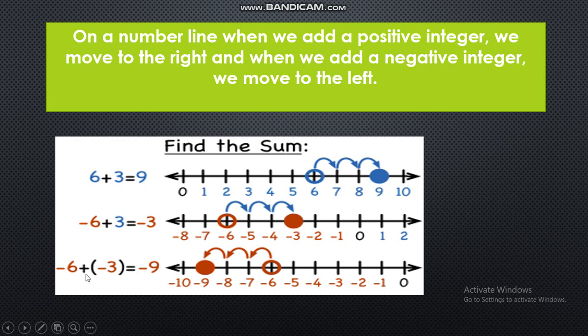What if we add 2 negative integers? Remember, when we add 2 negative integers, we have to move to the left hand side. So for minus 6, take 3 jumps to the left hand side — we get the answer minus 9.